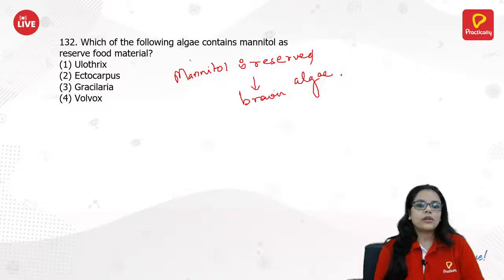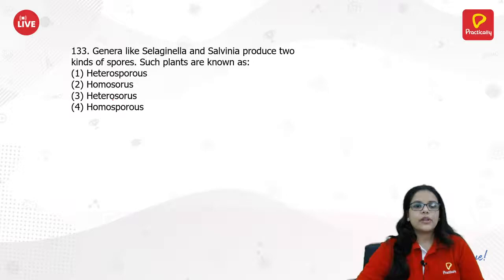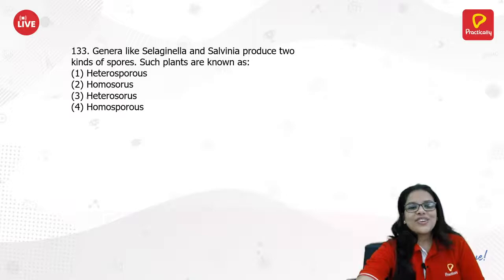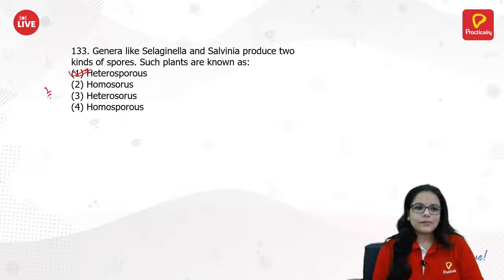Which algae contains mannitol as reserved food material? Mannitol is reserved mostly by brown algae. Out of the options, ectocarpus is a brown alga — so ectocarpus is the answer. Genera like Selaginella and Salvinia produce two kinds of spores — such plants are known as heterosporous.